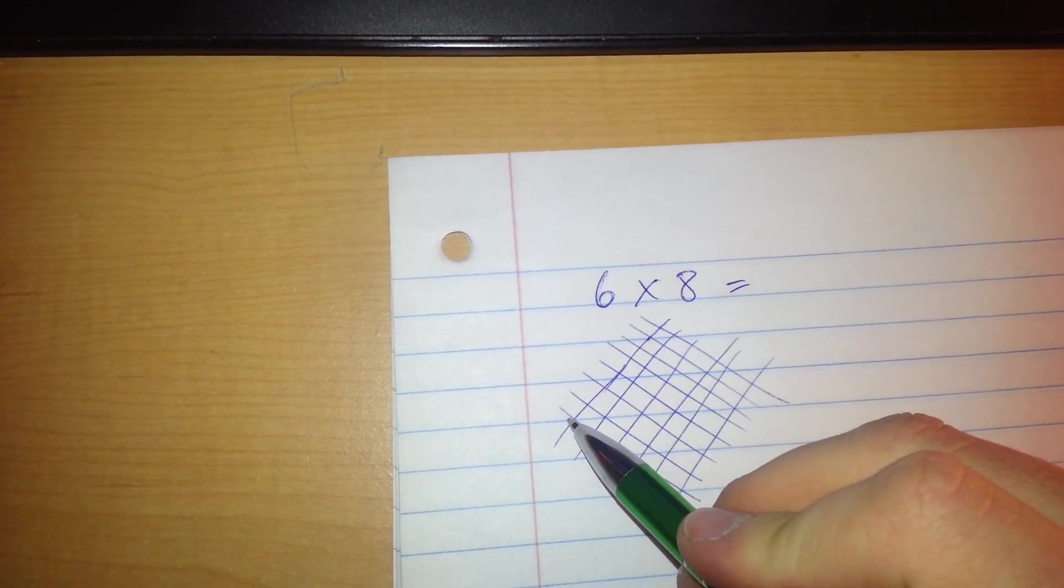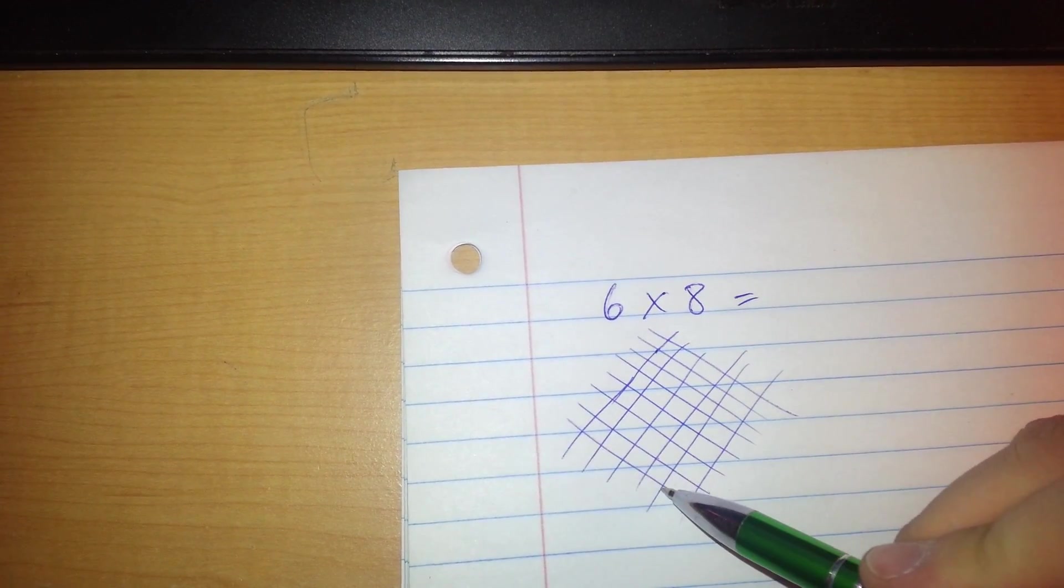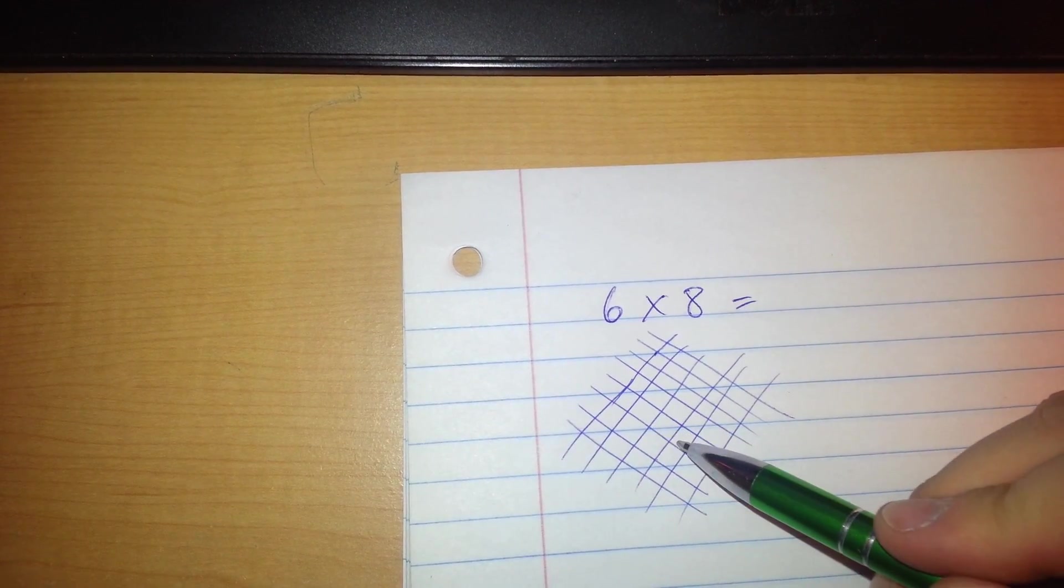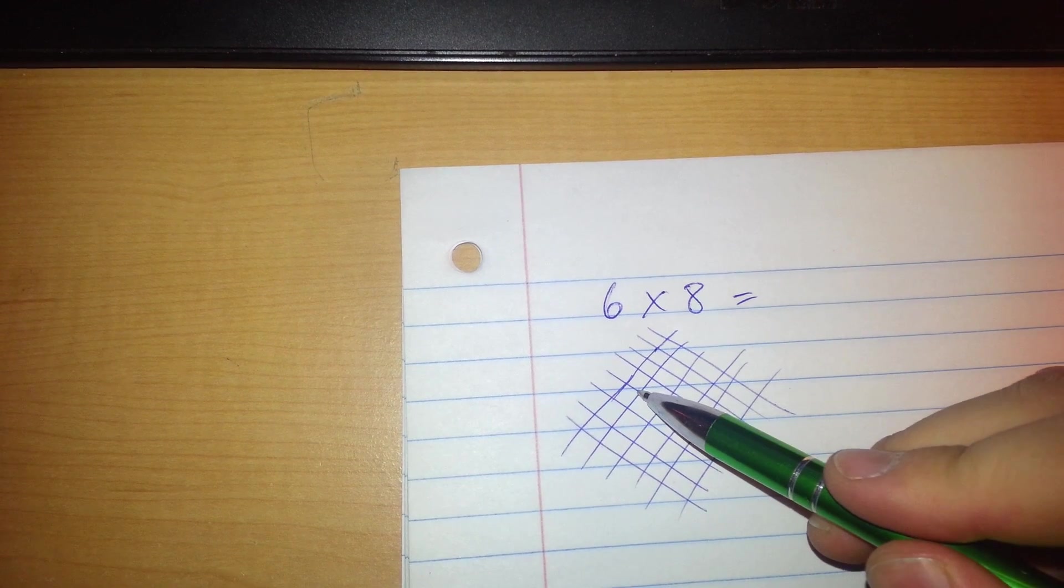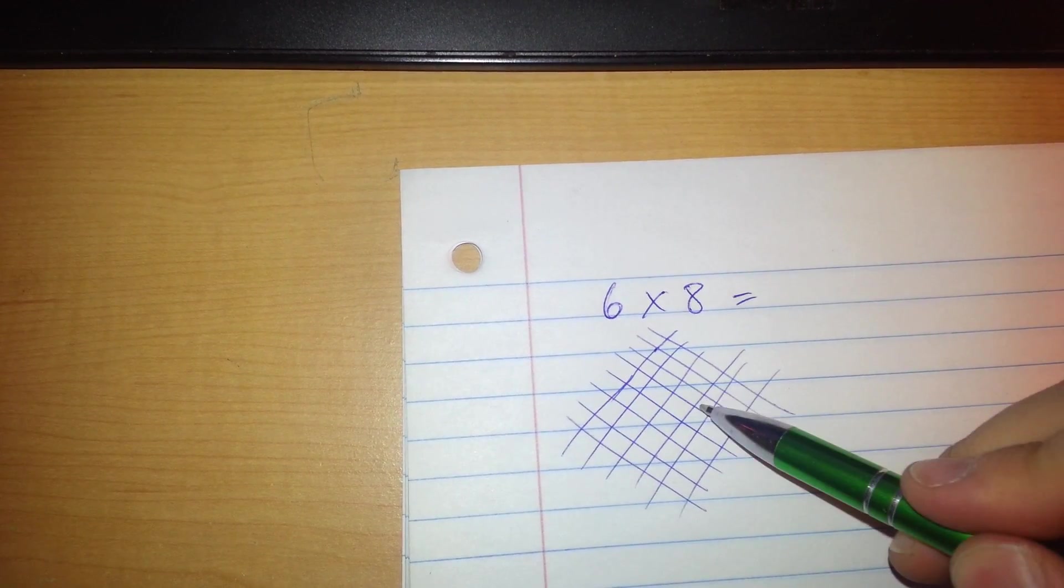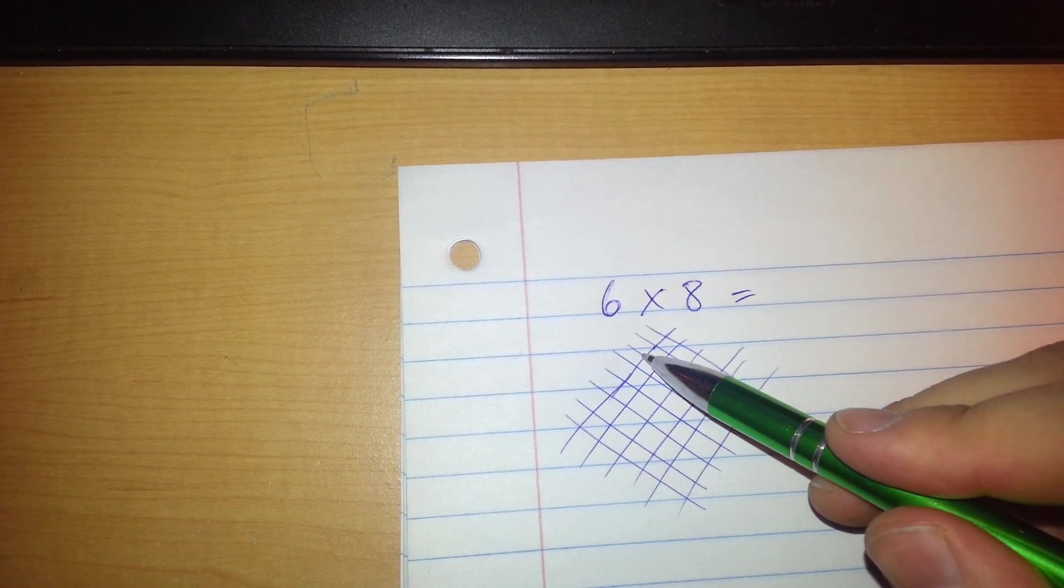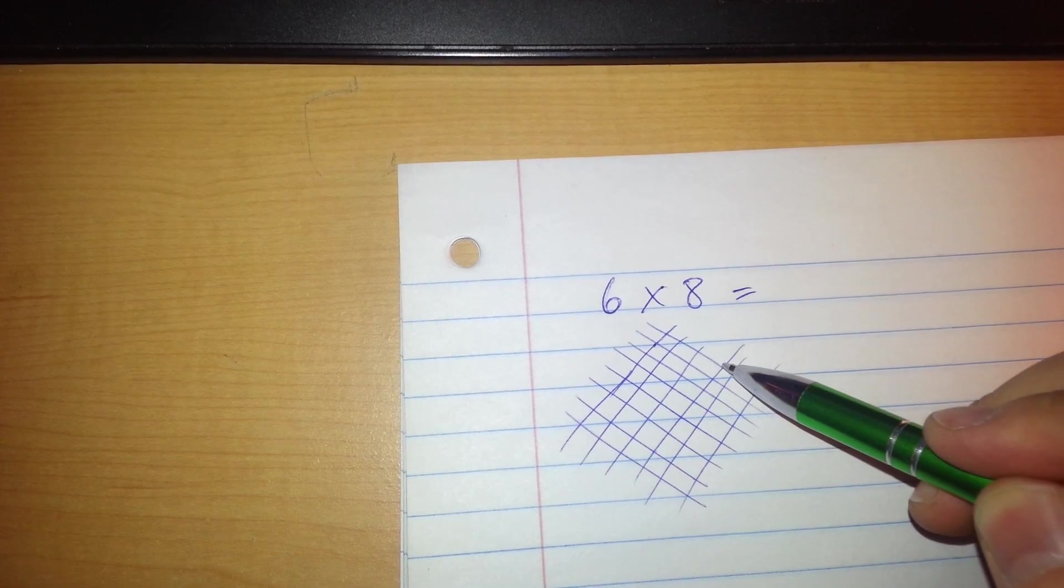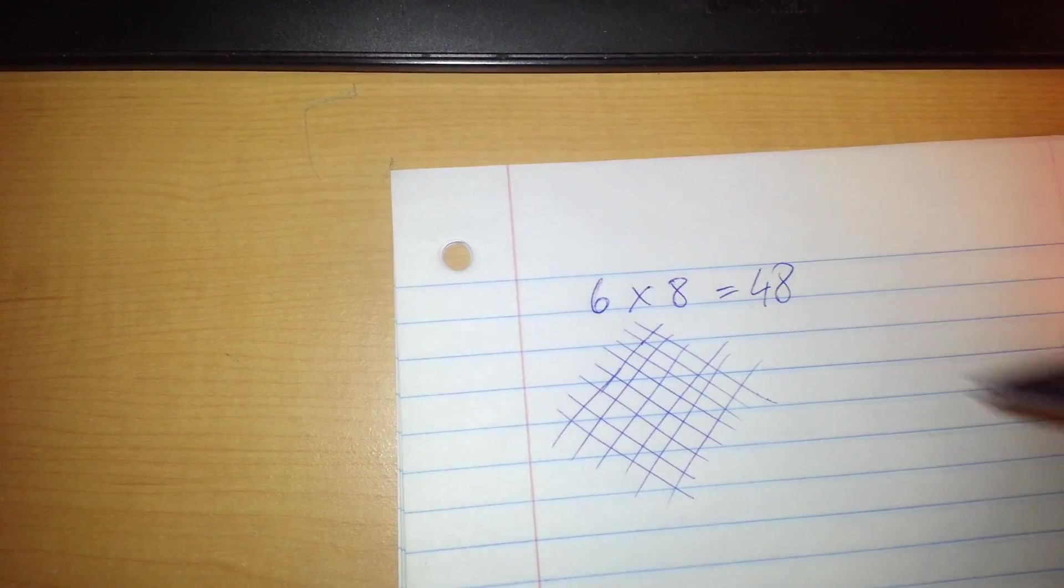And all you need to do is count the X's here. So it's 1, 2, 3, 4, 5, 6, 7, 8, 9, 10, 13, 14, 15, 16, 17, 18, 19, 20, 21, 22, 23, 24, 27, 28, 29, 30, 31, 32, 33, 34, 35, 36, 37, 38, 39, 40, 41, 42, 43, 44, 45, 46, 47, 48. And that's your answer.